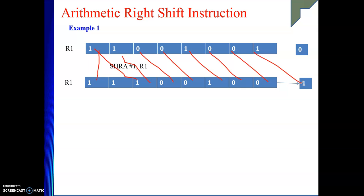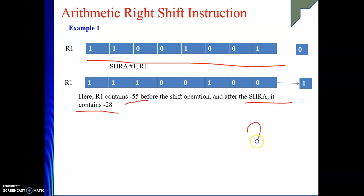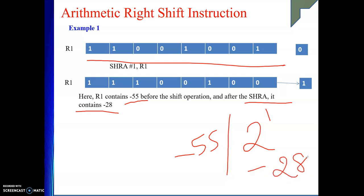This is the result of the operation. If we need to tell what the value of the result is and what was there in the register in the beginning — in this question, R1 contains minus 55. This content was representing minus 55 before we applied the operation. After the operation is applied, it will contain minus 28. We are performing a right shift operation, so the number will be divided by 2 to the power of the number of positions shifted. In our case, it is 2 to the power 1. So minus 55 divided by 2 to the power 1 will be minus 28, because the answer comes in integer only — it is an integer division.